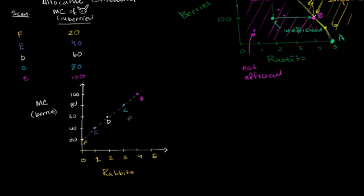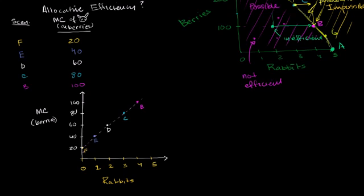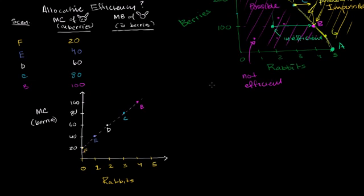We still don't know which scenario to pick. To think about that, I want to introduce something called the marginal benefit of an incremental rabbit, again written in berries. The way to think about marginal benefit is: if we are the hunter-gatherer sitting in one of these scenarios, how much would we pay to some hypothetical convenience store — one that only sells bunnies and only accepts berries — for an extra rabbit?